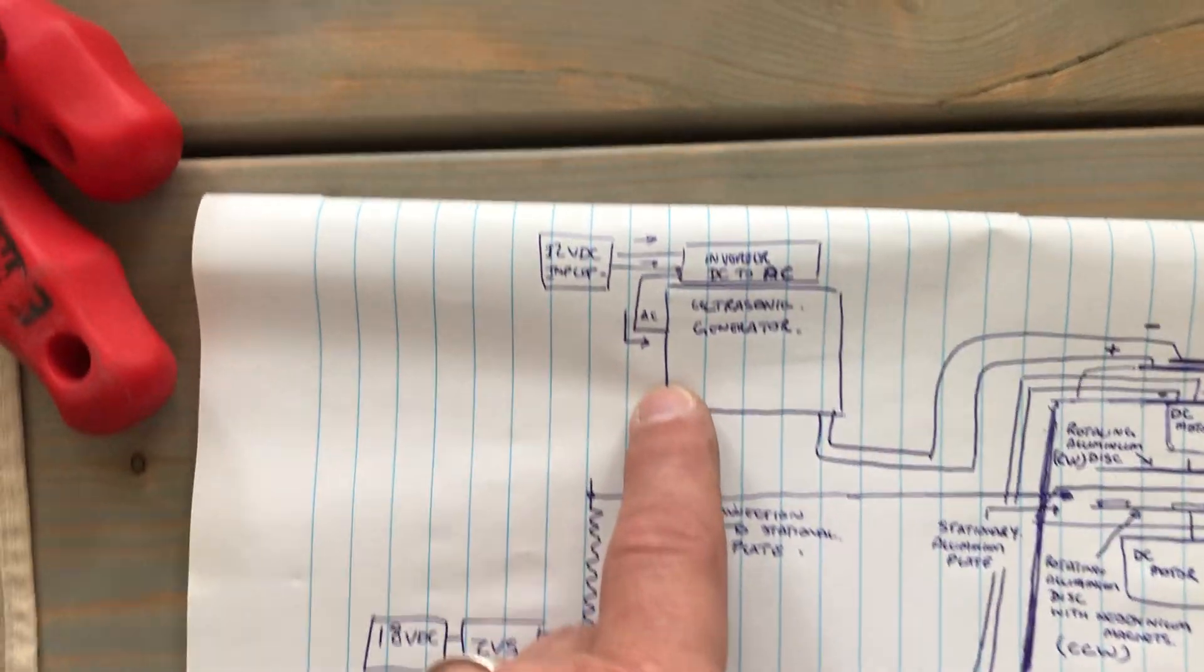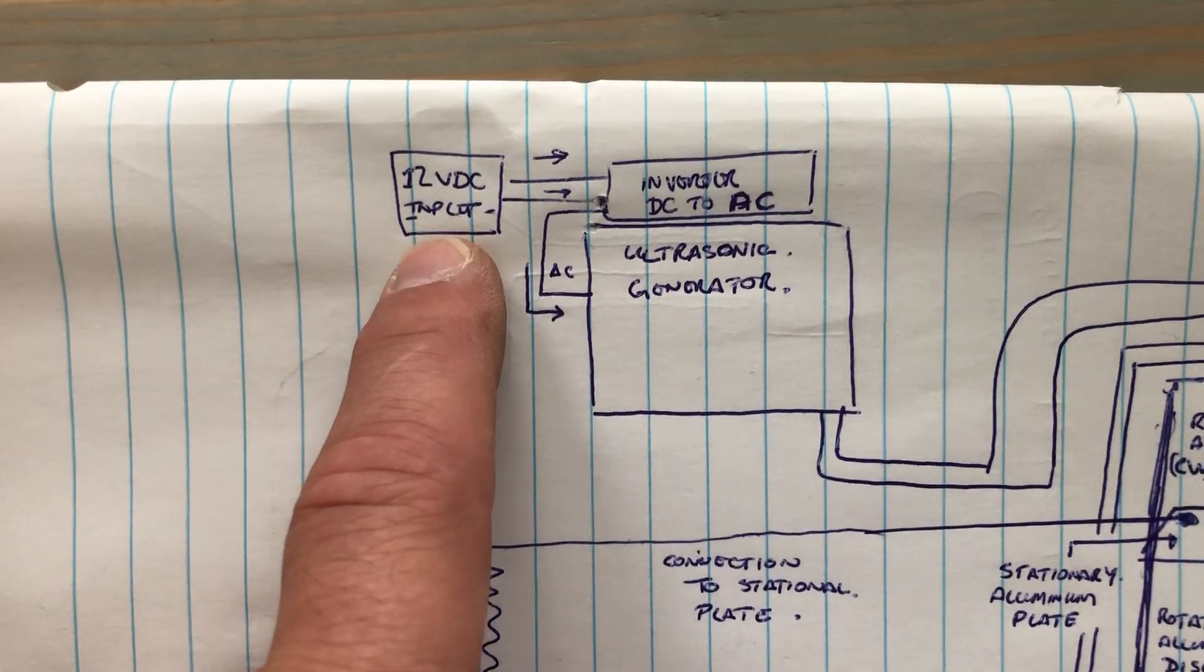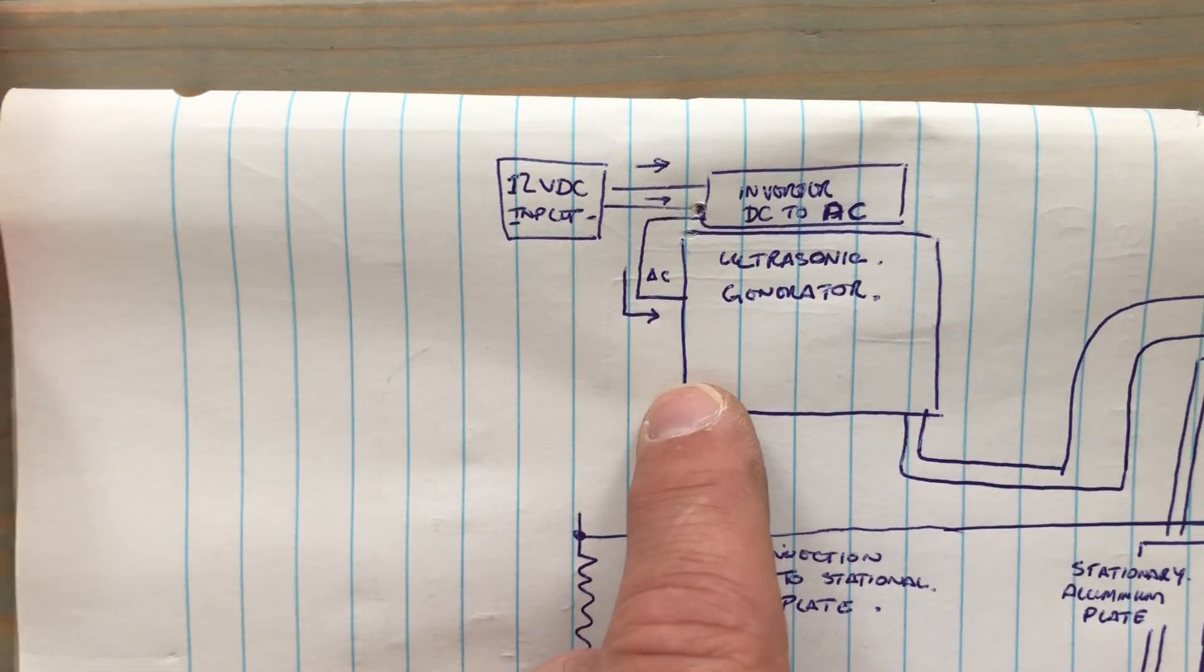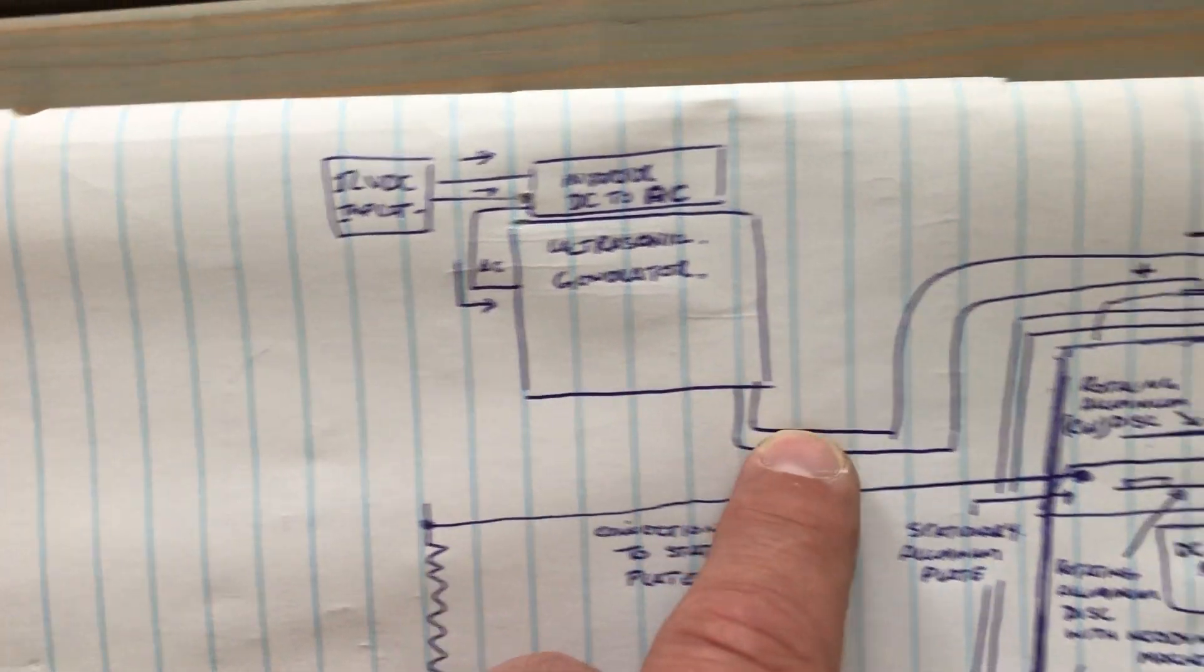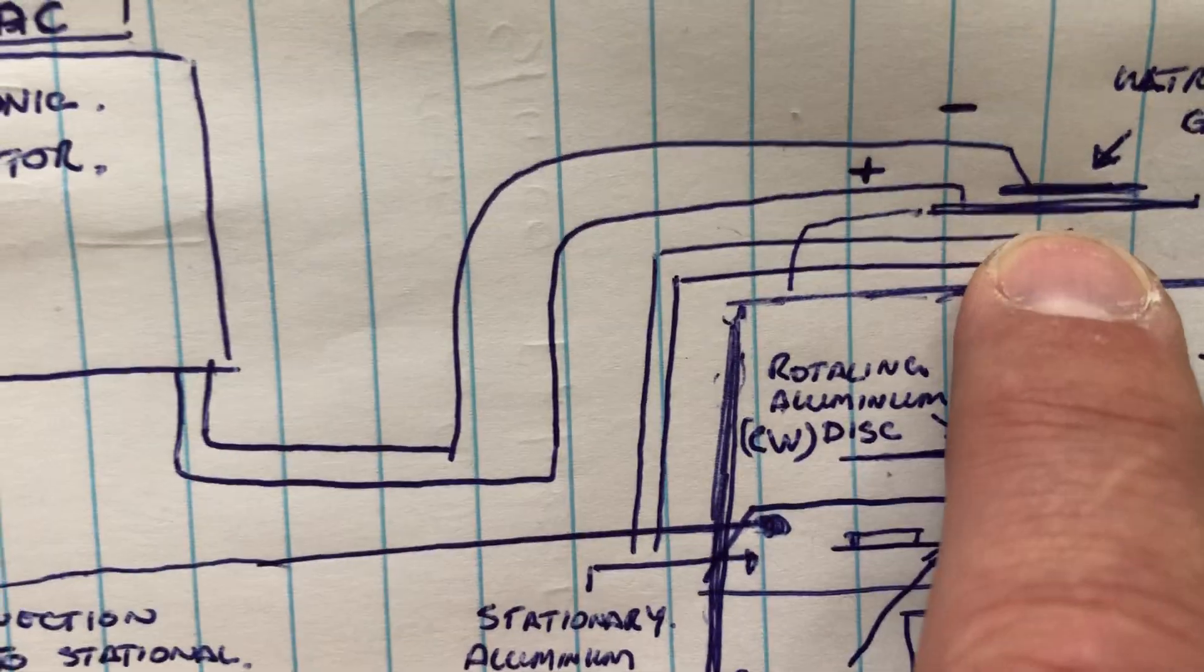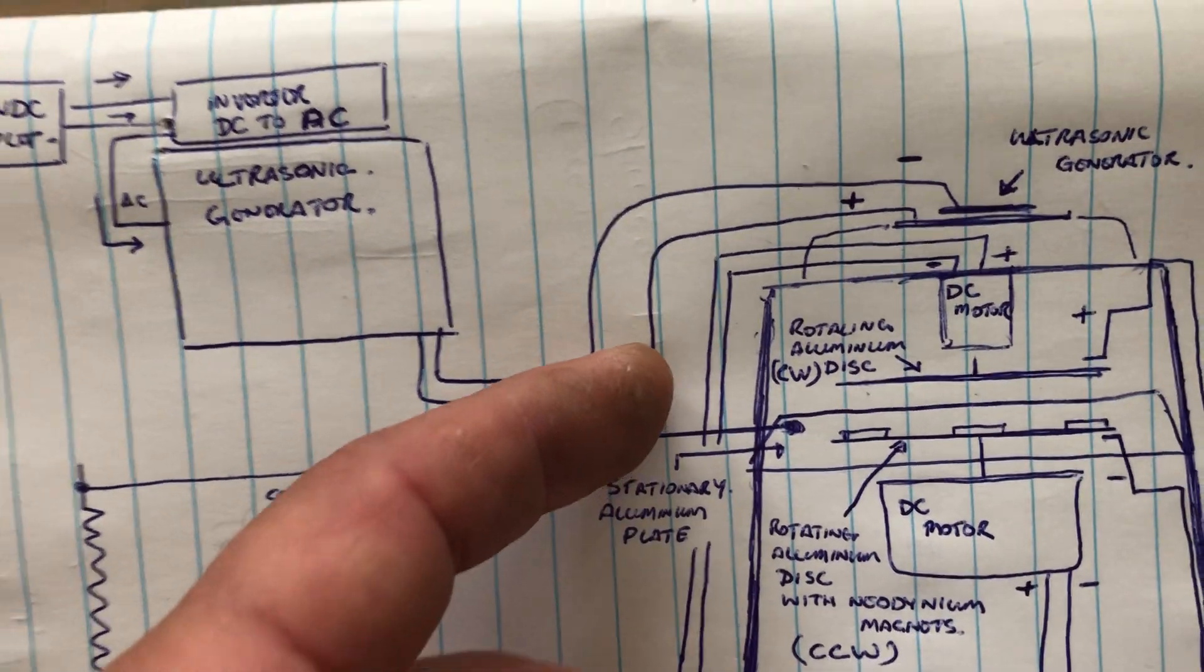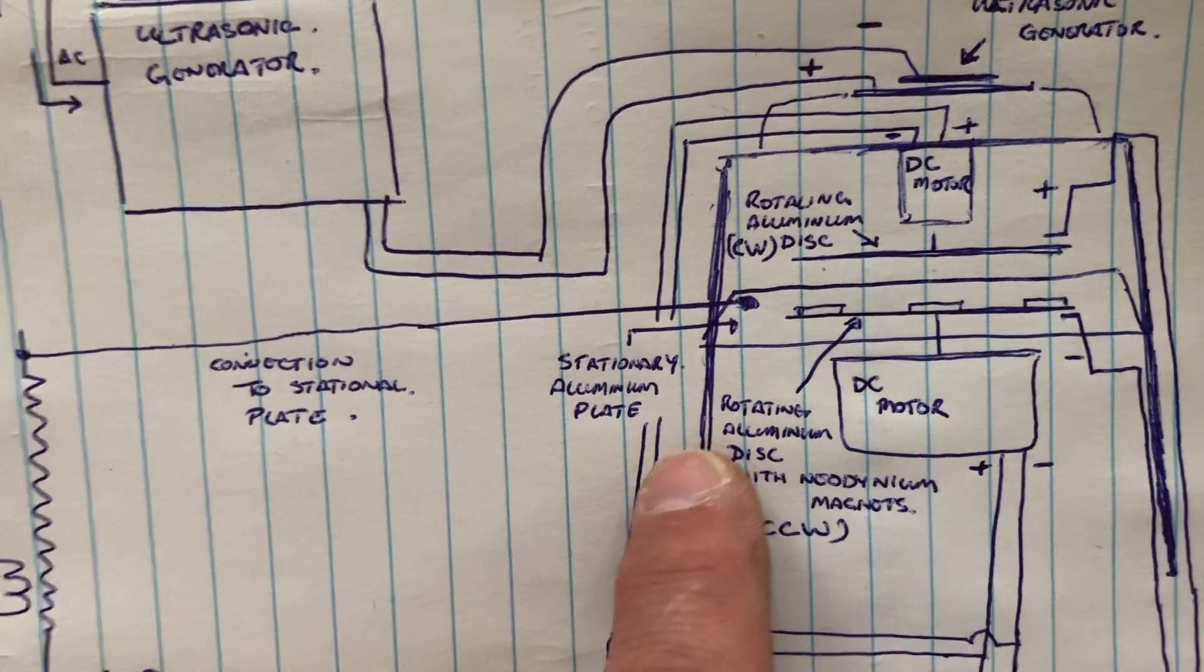The other side is the generator. Again 12 volt input DC to AC inverter which allows me to power the ultrasonic generator on the top. As you can see as a plus and a minus.